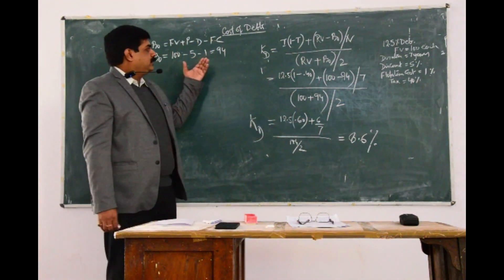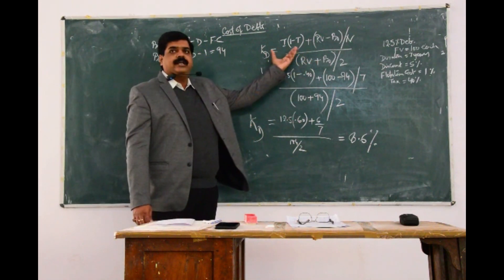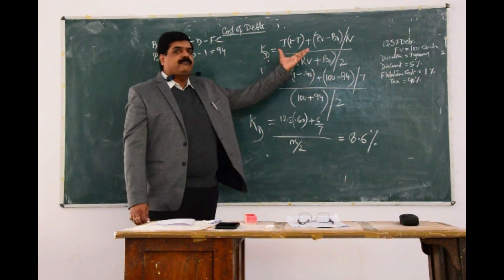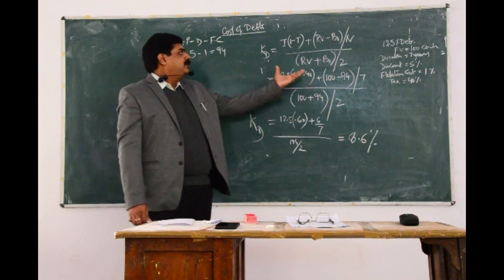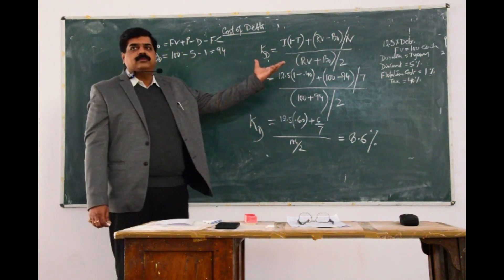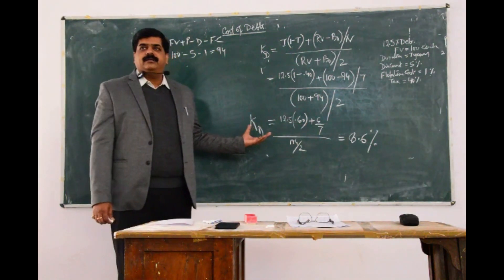I suppose the concept is very clear. The small equation that we have: interest, adjust the tax, redemption value minus the issue price divided by the life of the project, redemption value plus issue price divided by 2. You solve the equation and you get the result as the value of KD. Thank you.